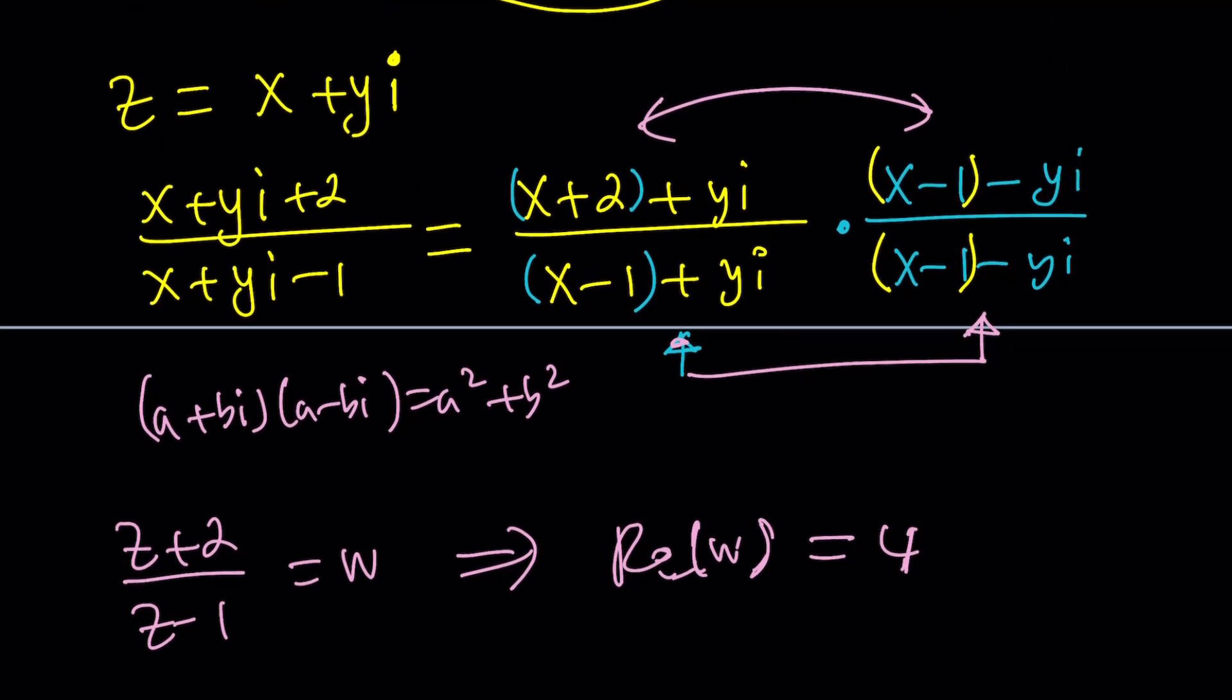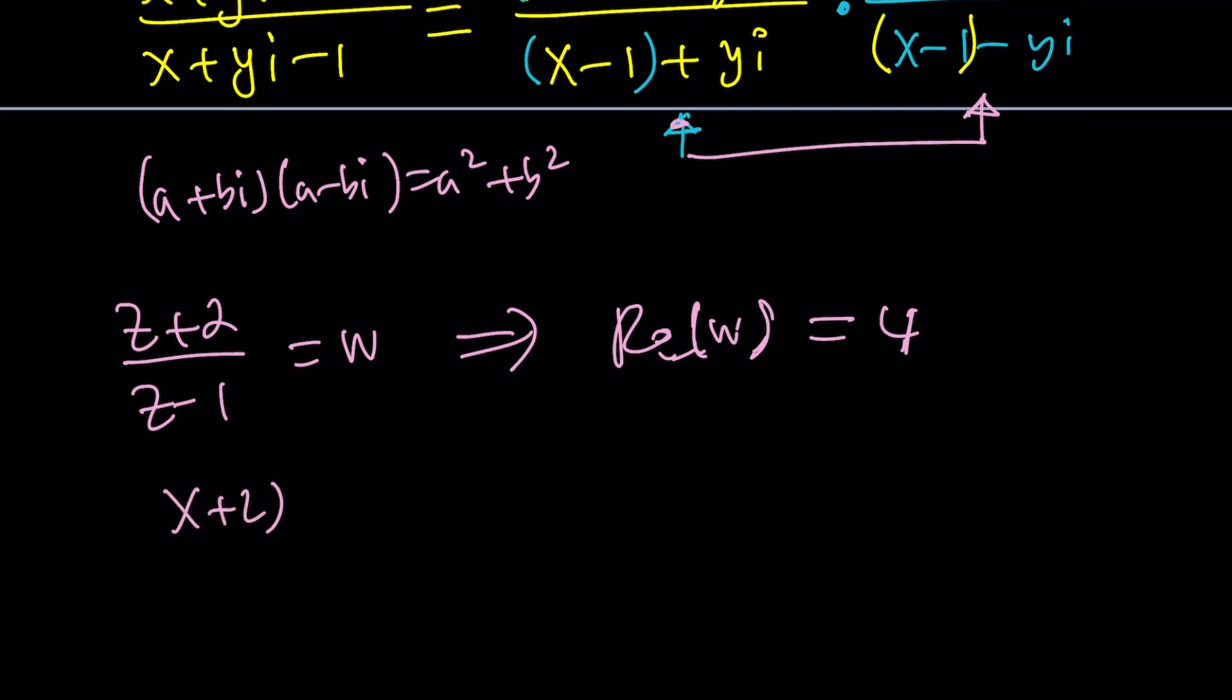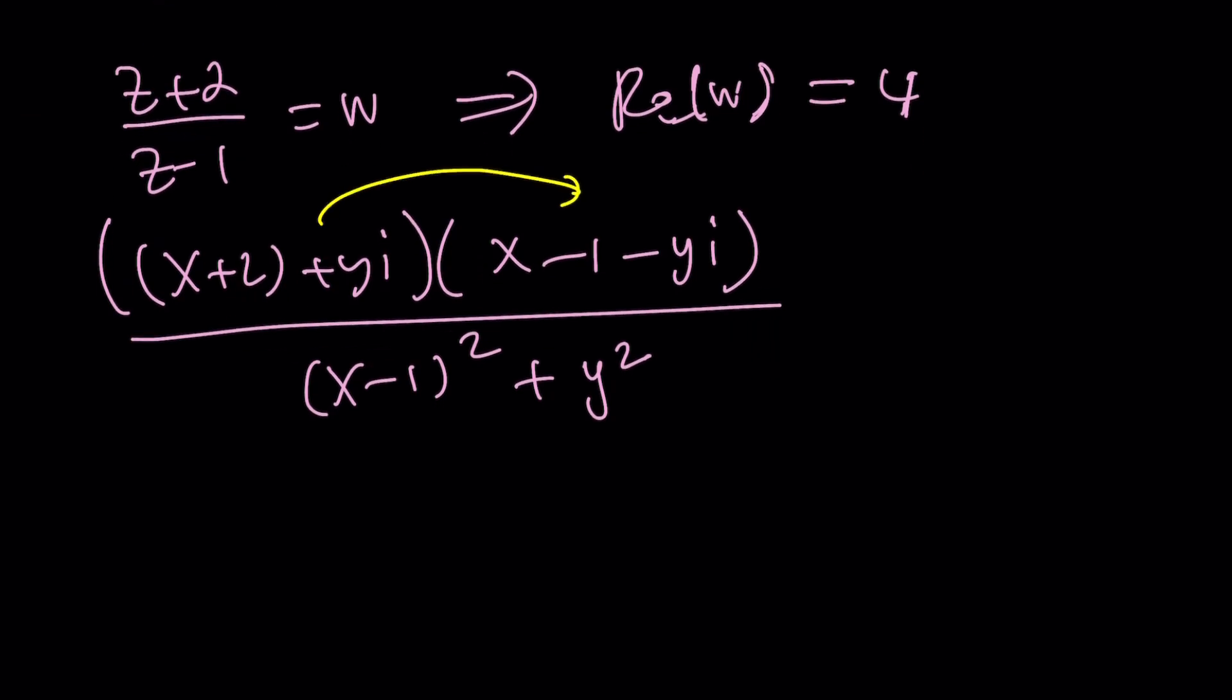Let's write this number in the simplest form. We're supposed to multiply (X+2) plus YI by (X-1) minus YI, divided by (X-1) squared plus Y squared. This is our number. We want the real part of this. So we need to distribute the numerator and then take the real part divided by the denominator. Anytime you have something like A plus BI divided by C, this can be written as A over C plus B over CI, and the real part just becomes A over C. But what is the real part? What is this going to look like?